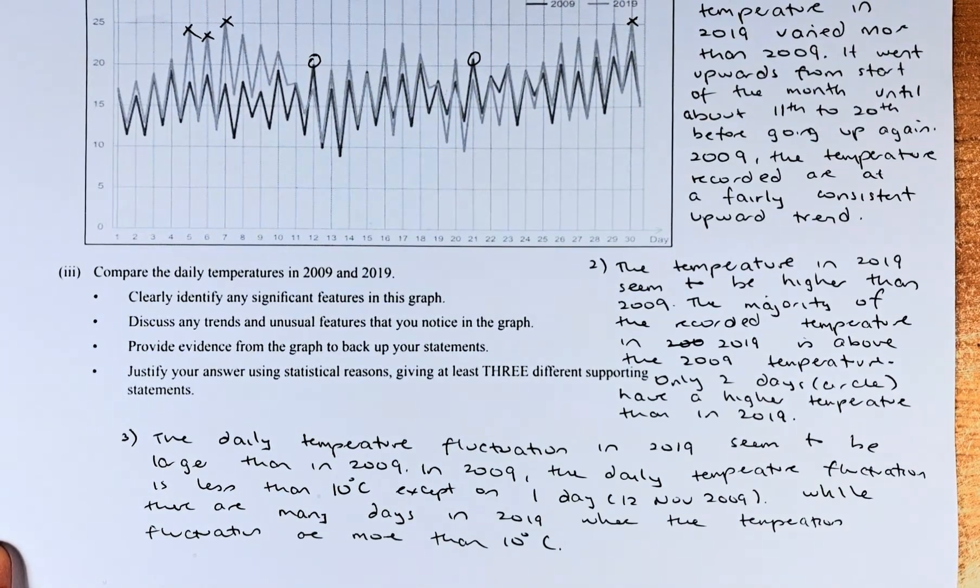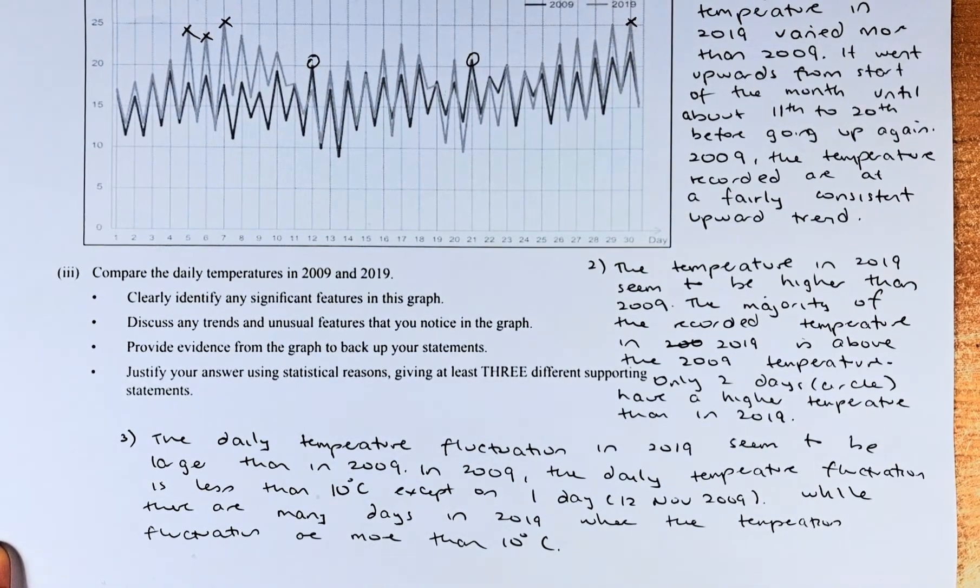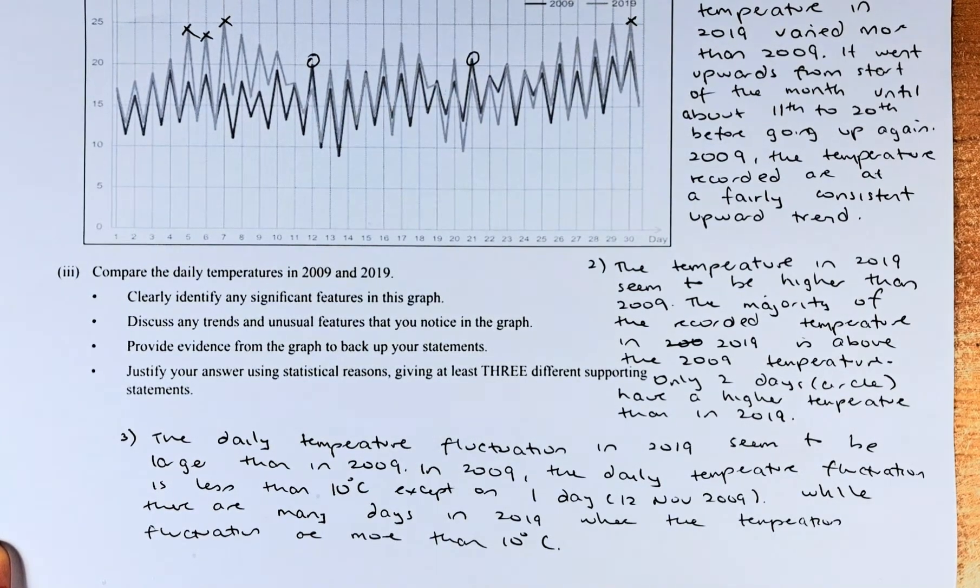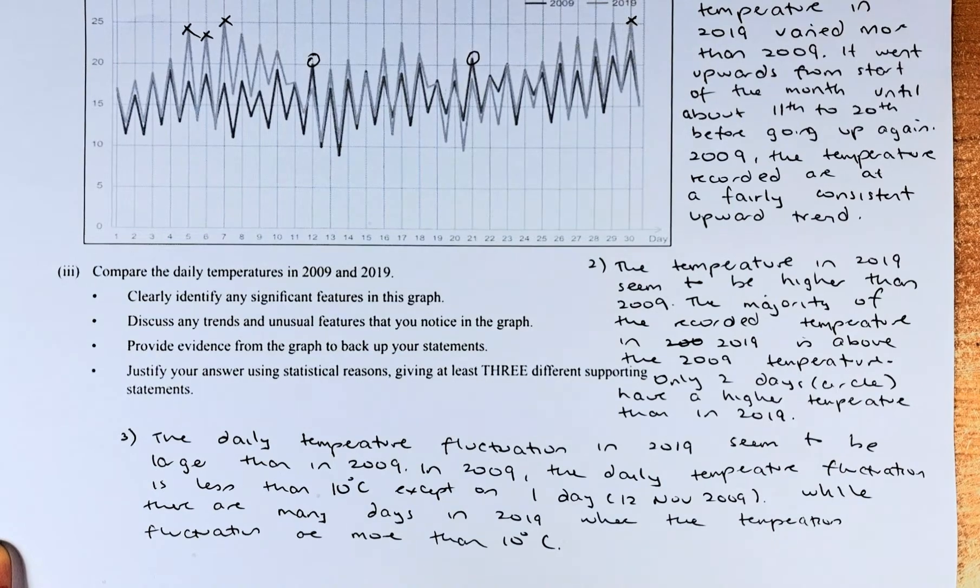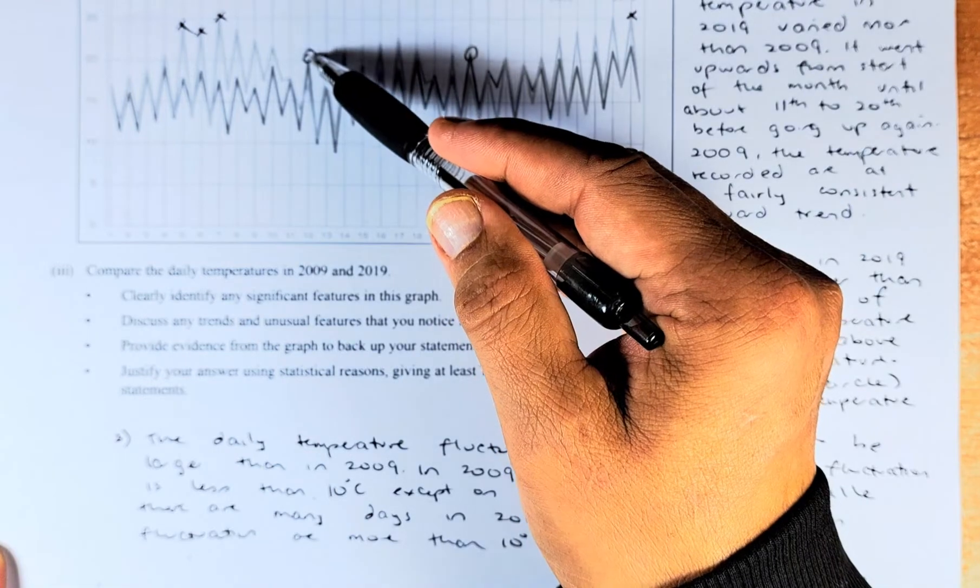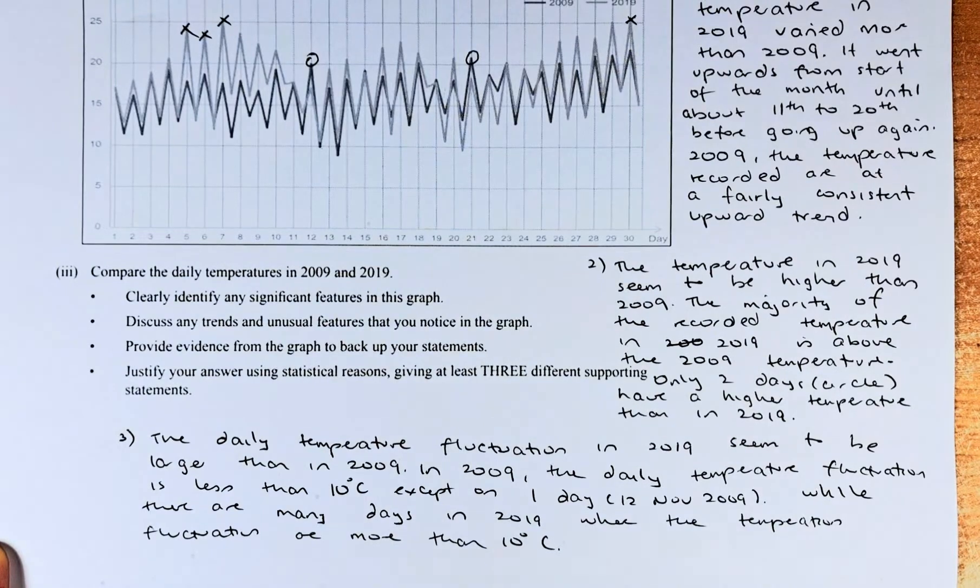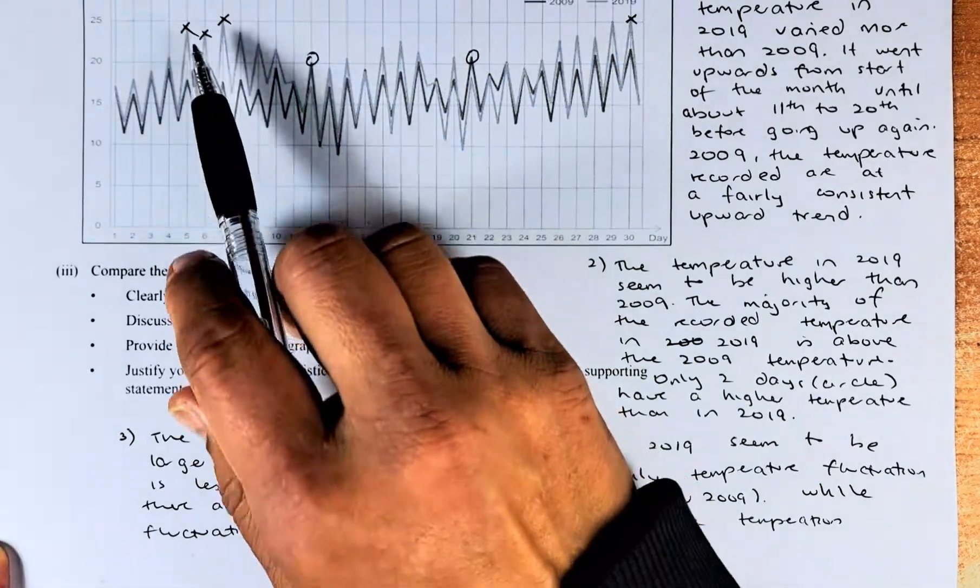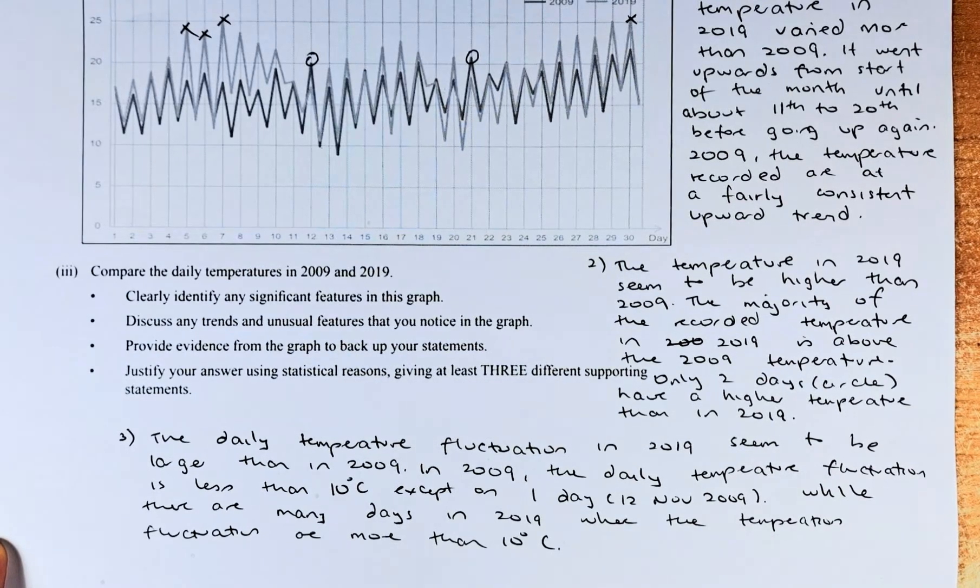We're going to answer the third one. The daily temperature fluctuation means the highest minus the lowest in 2019 seems to be larger than in 2009. In 2009, the daily temperature fluctuation is less than 10 degrees except on one day. The only day that fluctuates more than 10 degrees is, I reckon, on the 12th of November. From here to here, it fluctuates more than 10 degrees. Other than that, it's all less than 10 degrees. While for 2019, the lighter line, it fluctuates more than 10 degrees on more than one day. This point here, one of them is more than 10 degrees. So that is how you answer the question.